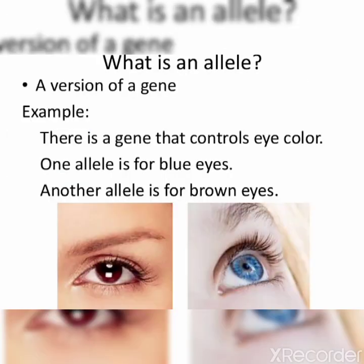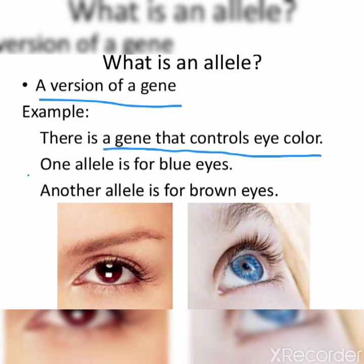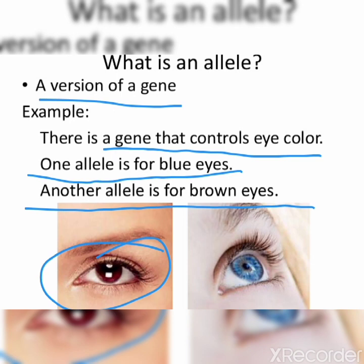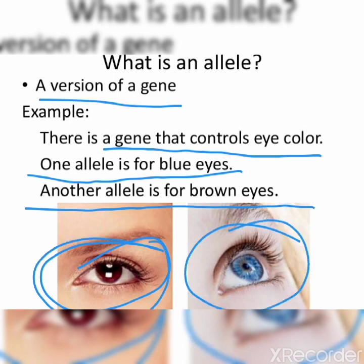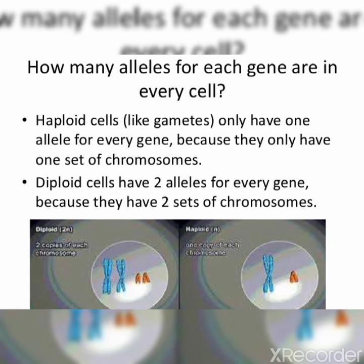What is an allele? A version of a gene. Normally every gene has two alternative forms for a character, producing different effects, and these alternative forms are called alleles. For example, there is a gene that controls eye color — one allele is for blue eyes and another allele is for brown eyes. So there are two alleles of this gene.